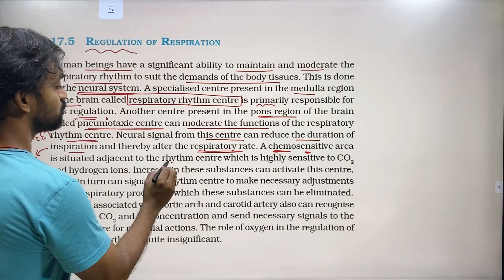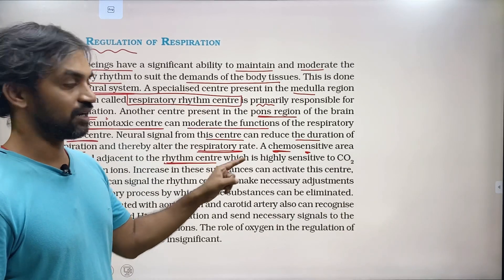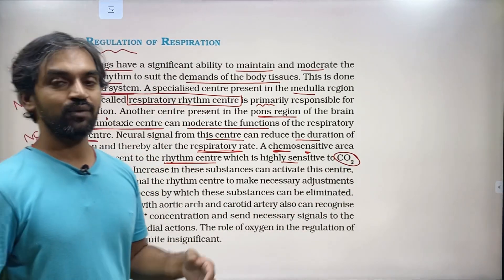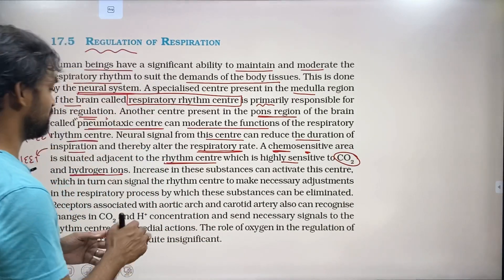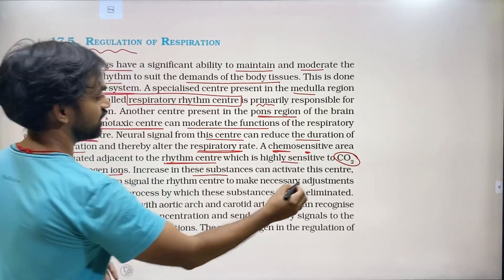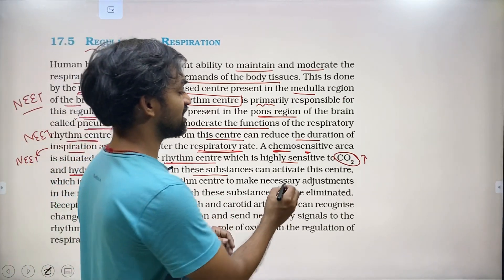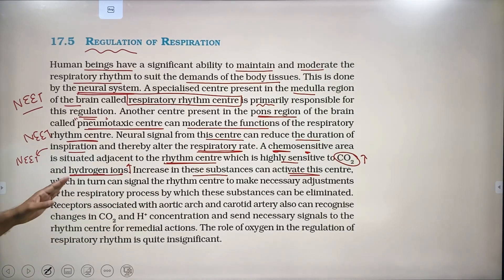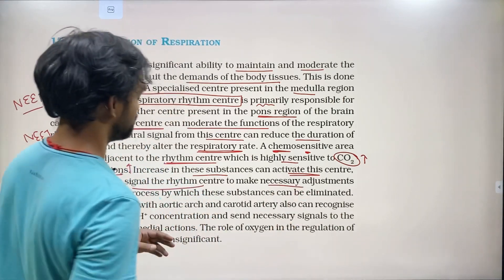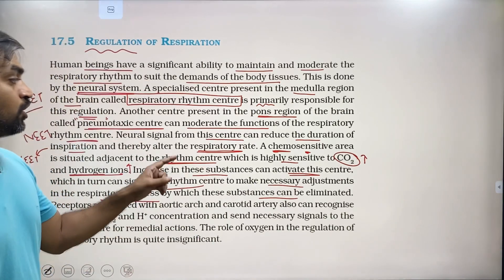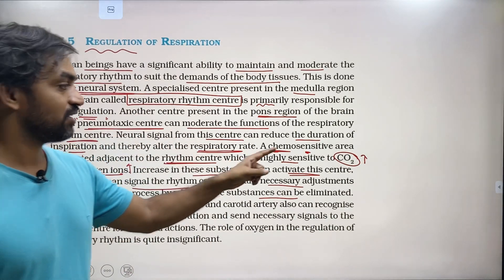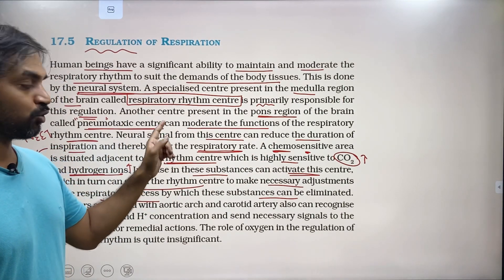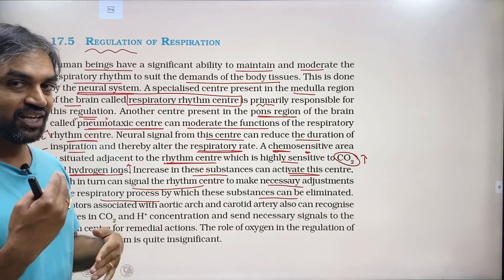There is also a chemosensitive area near the respiratory rhythm center in the medulla. This area is highly sensitive to chemicals — specifically carbon dioxide and hydrogen ions. An increase in these substances, particularly CO₂, can activate this center.